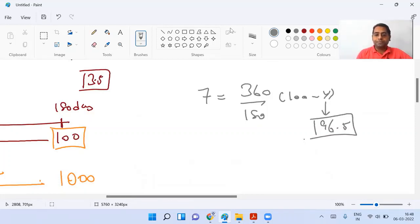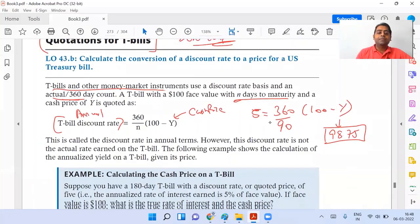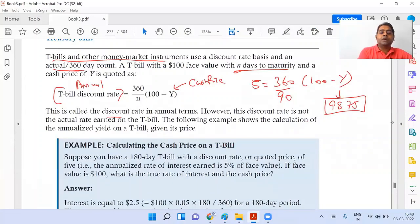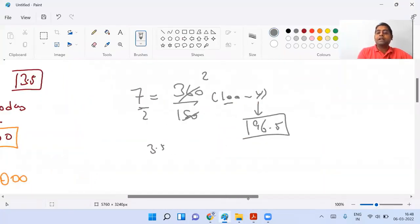Right. Now, 2 times 180 divided by 360 is 1, so you get 7 times 1 equals 7. When you take it over here, it's going to be 3.5 minus 100, you'll get the answer. So this discount rate or this part is in annual terms. This is not the actual rate earned by the T-bill. Why? I'll go back to my example now, please understand.